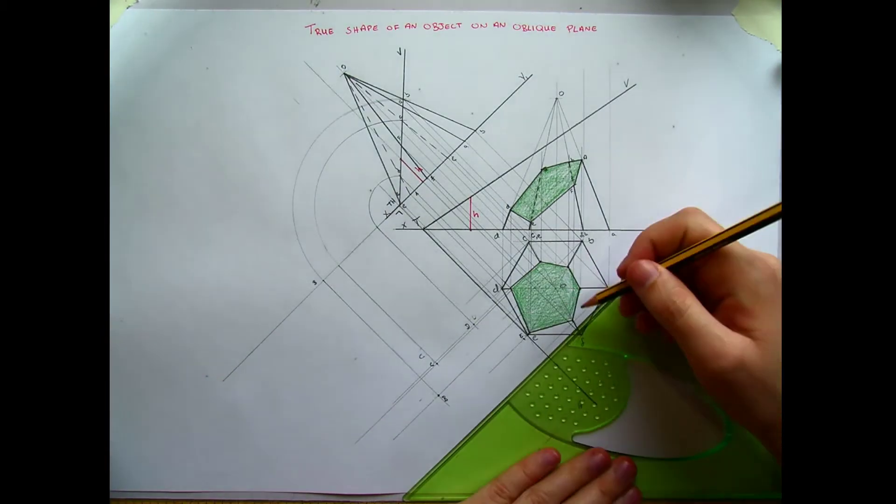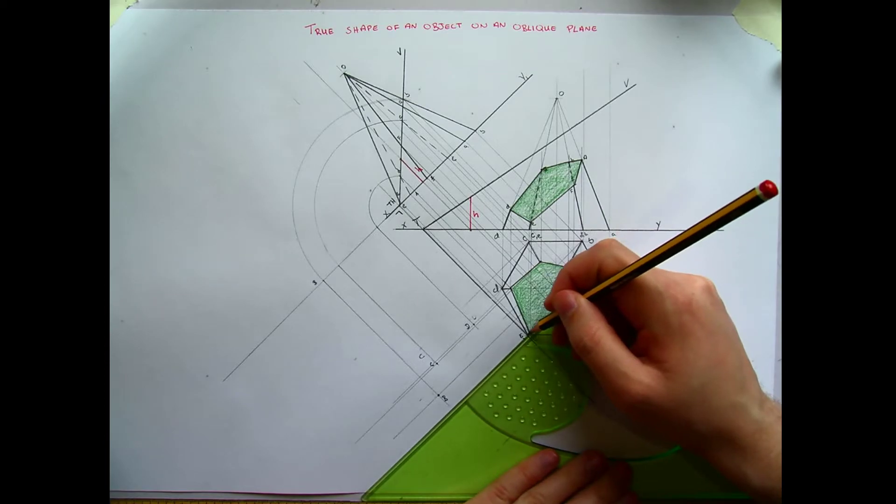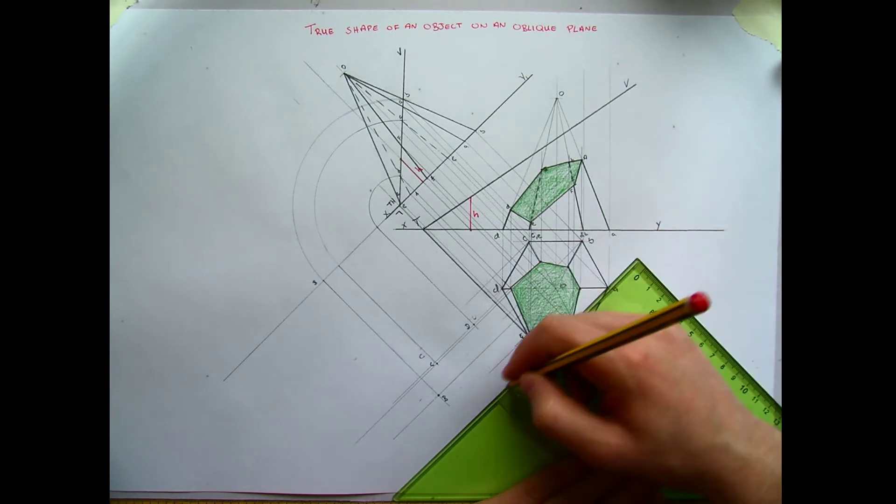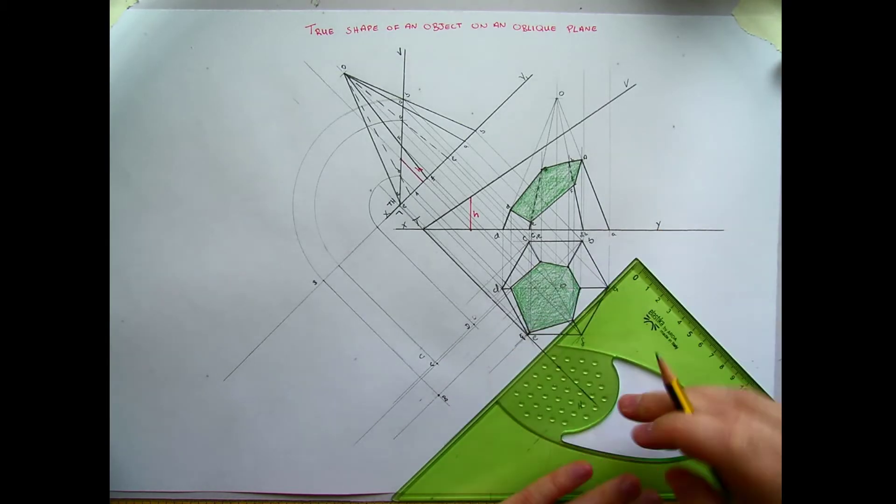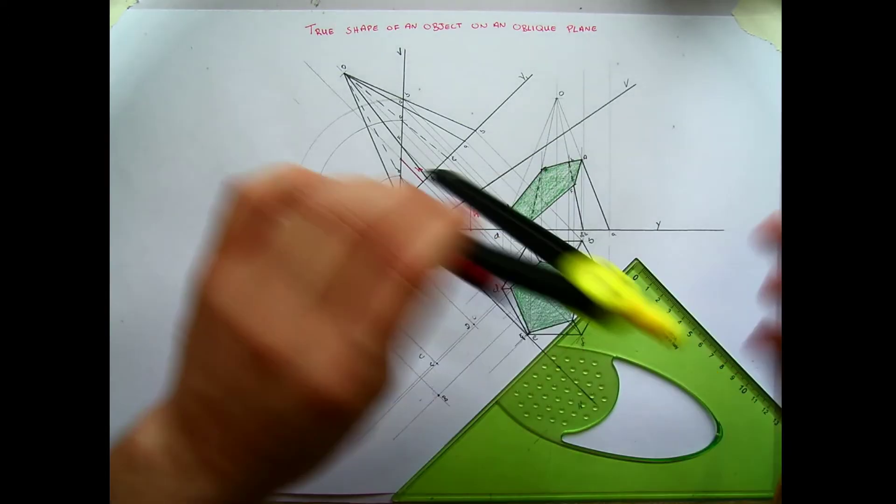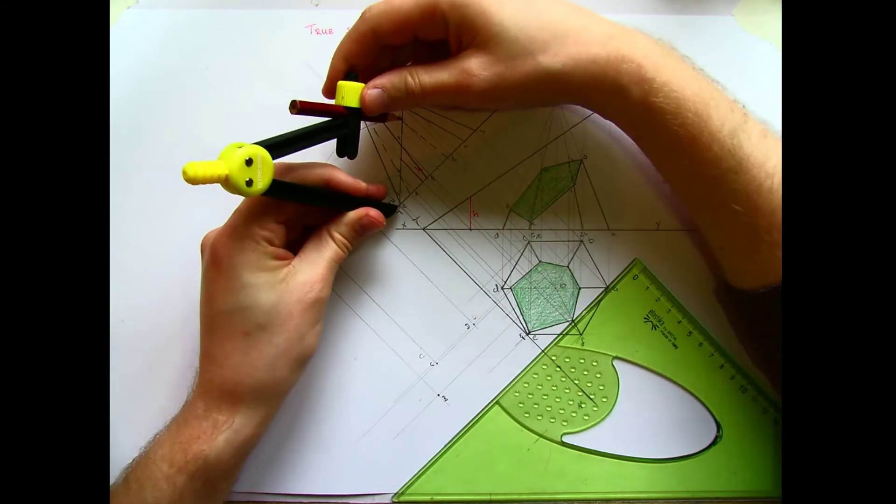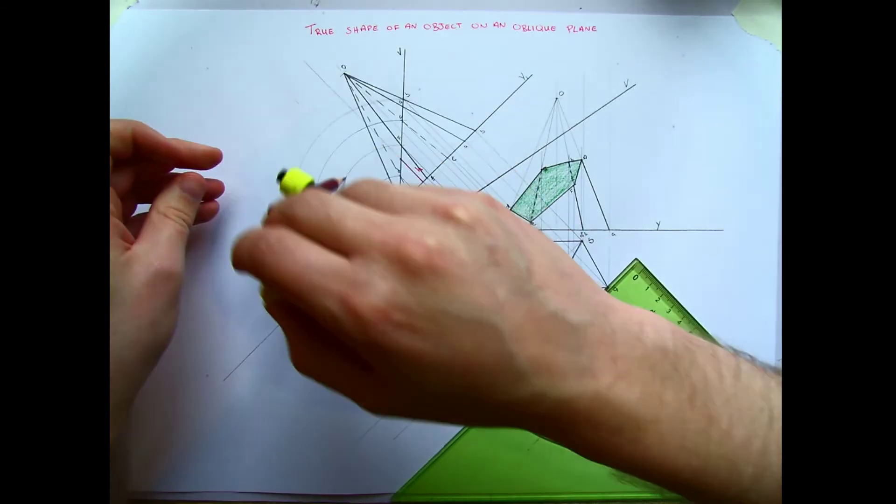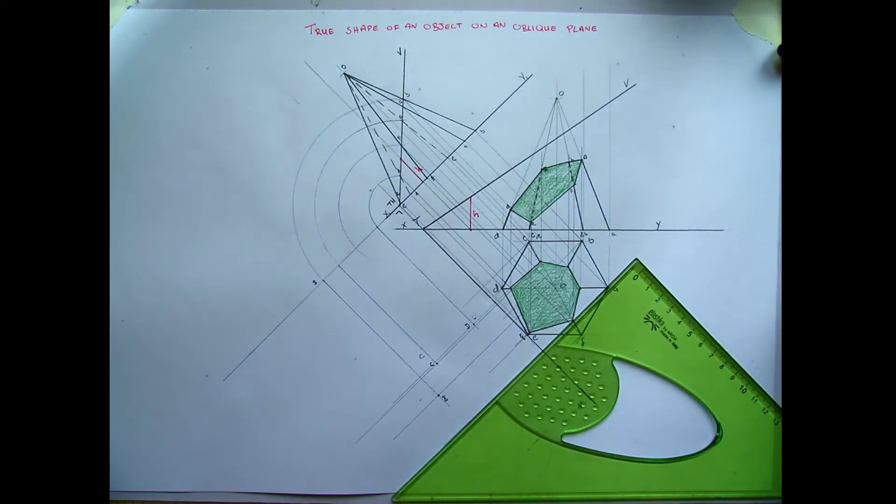f. Again I'm taking point f. Point f. So where it cuts the oblique plane. So the point on the cut surface. Point f. I'm going to swing that point again around until it touches the x1, y1 line.